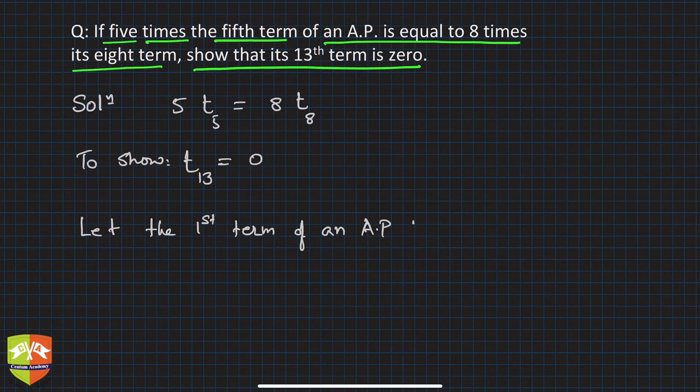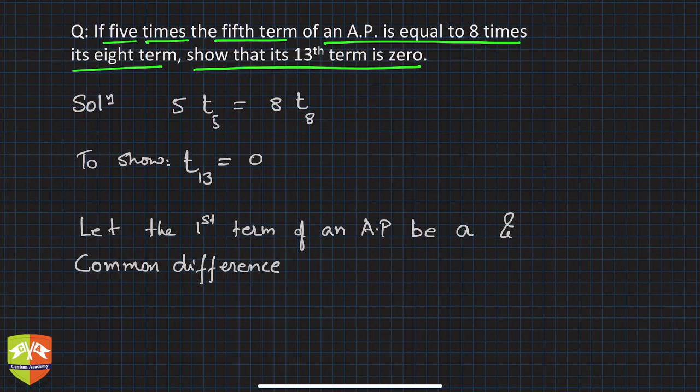And the common difference—there are two parameters in AP which are vital—the common difference is 'd'.